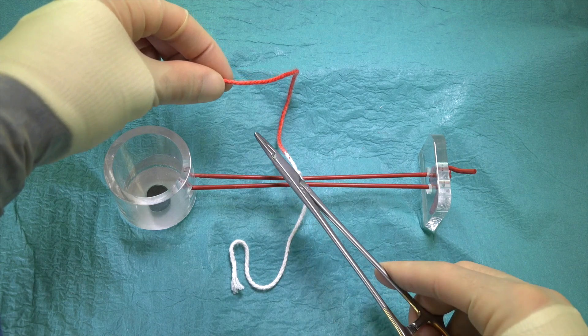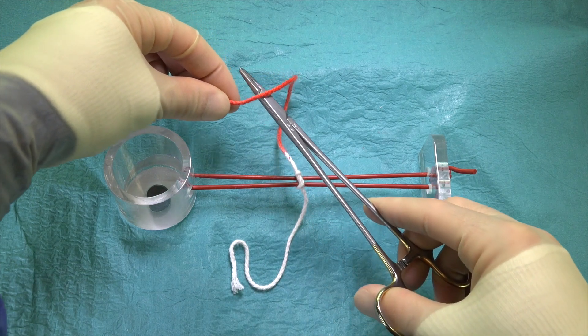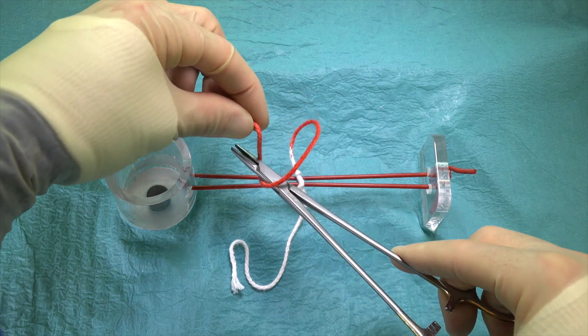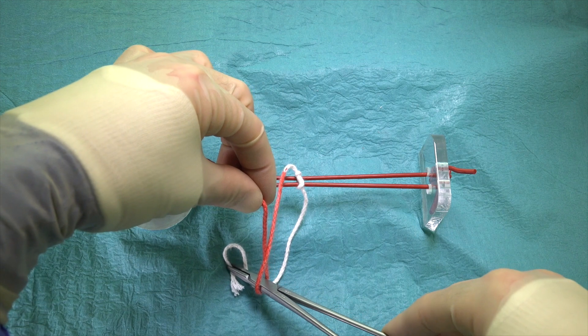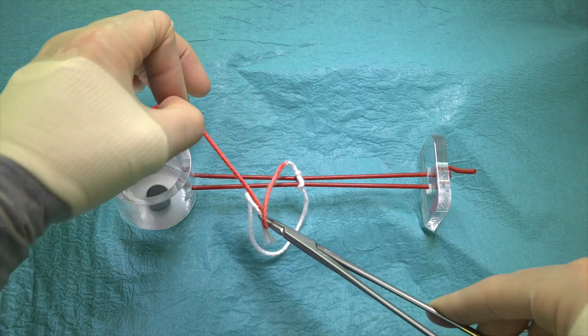We reposition the instrument holder over the suture again, and then the left hand, which is holding the suture end lying away from us, loops the suture over and around the needle holder. But on this occasion, we only form one loop.